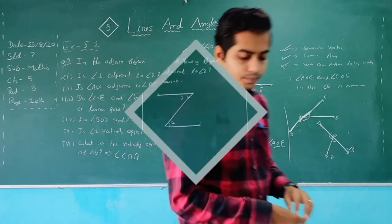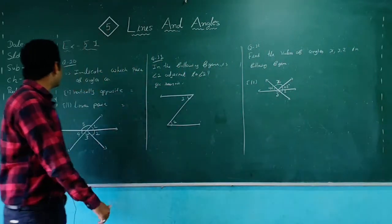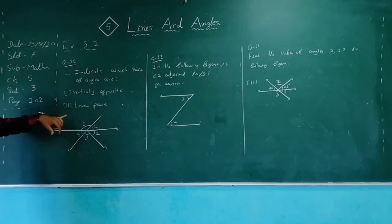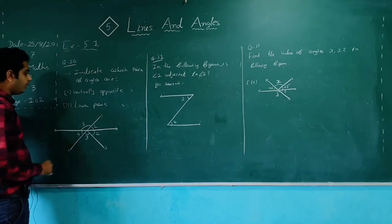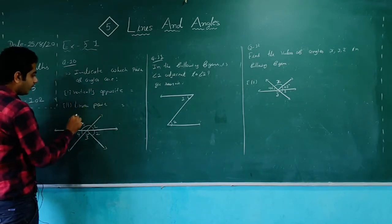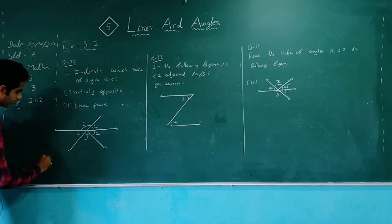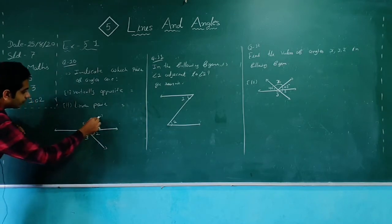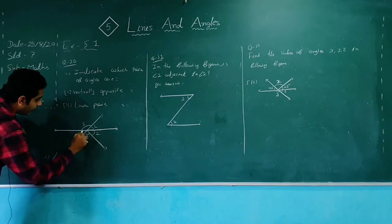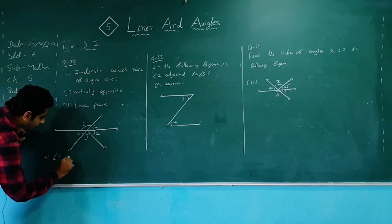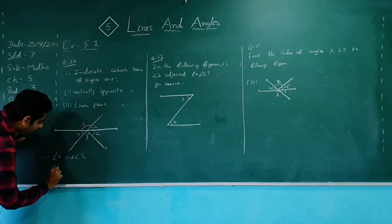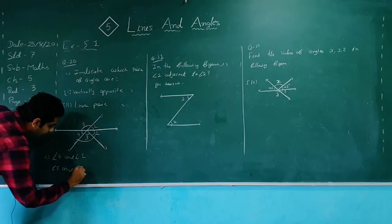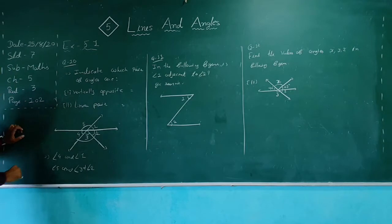Moving on to question number 10: indicate which pairs of angles are vertically opposite and which form a linear pair. For vertically opposite angles, the two lines are crossing. One pair is angle 4 and angle 1. Another pair is angle 5 and the combined angle (angle 3 plus angle 2).